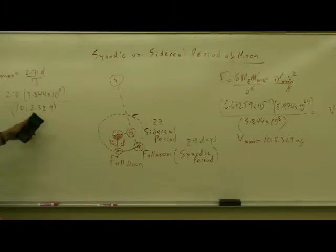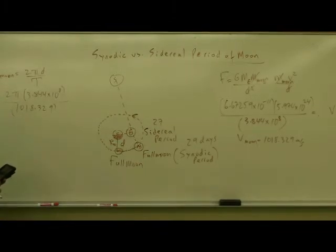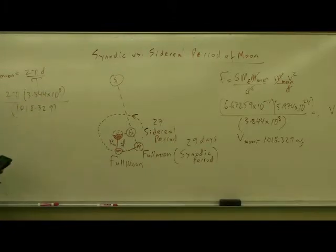So I take the answer that I just got. Then I do this: 2 pi times 3.844 times 10 to the power of 8 divided by 1018.329.